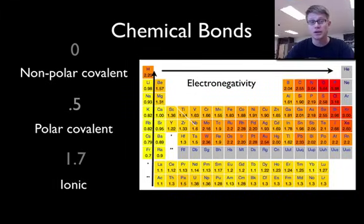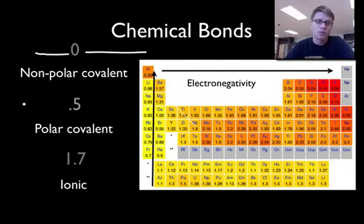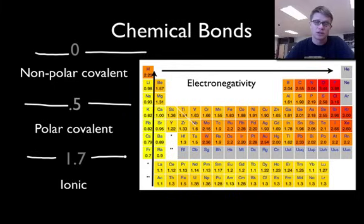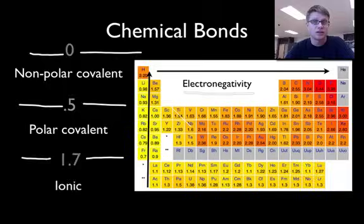So how do you know which type of a bond it is? These numbers are pretty important to remember. If you have somewhere between an electronegativity difference of 0.5 and 0, it's a nonpolar covalent. If your electronegativity differences are between 1.7 and 0.5, then it's a polar covalent. And if it's above 1.7, then it's ionic.